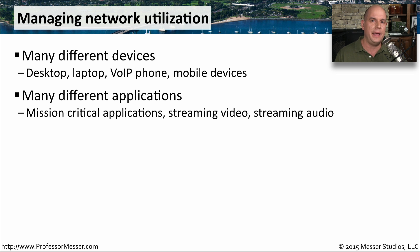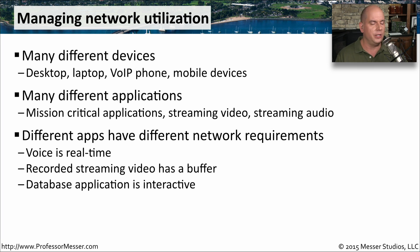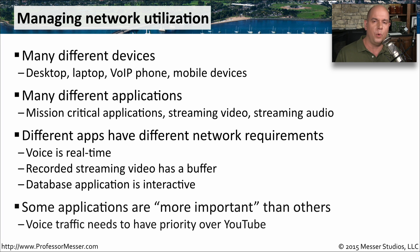Each one of these applications has a different set of requirements. The voice communication needs to happen in effectively real time. The streaming video that you're watching probably has a buffer, so there's a little bit of leeway as far as the type of traffic stream you have to worry about. And if you're using a database, you'd want a relatively fast response time. Some applications, therefore, we might consider to be more important than others. That voice communication, because of its real-time function, may be more important than the streaming video. But how do you manage your network so that voice communication has more priority than something like streaming video?